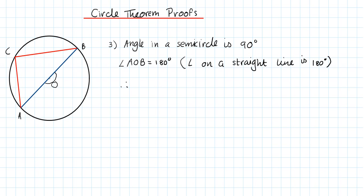Therefore, I'm going to say angle ACB is equal to 90 degrees. And the reason for this is we're going to use the first circle theorem. Angle at the center is double the angle at the circumference.